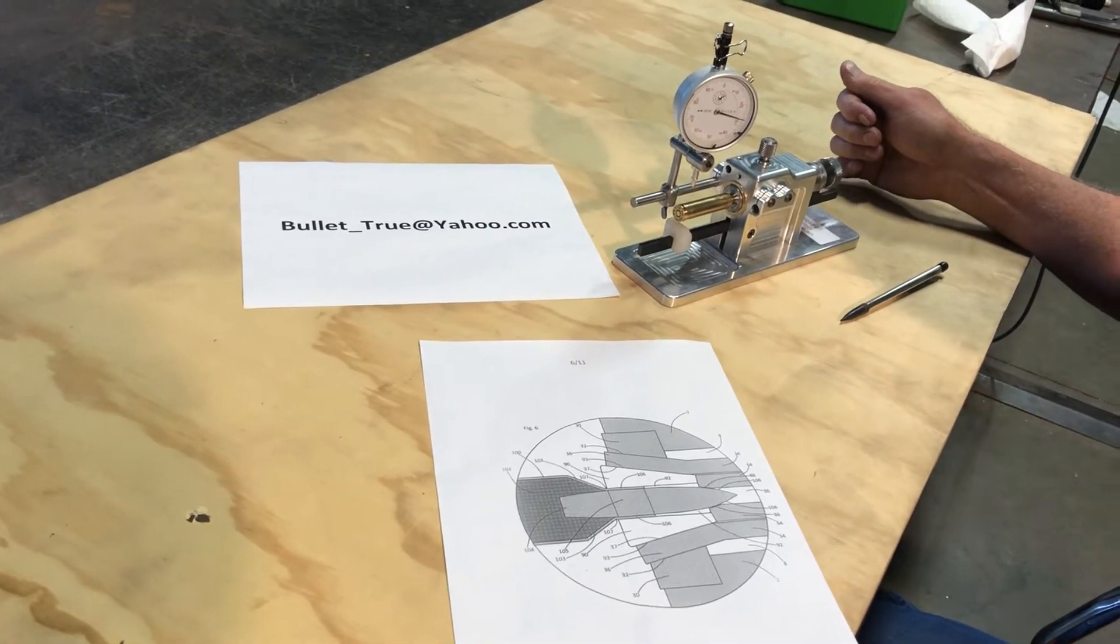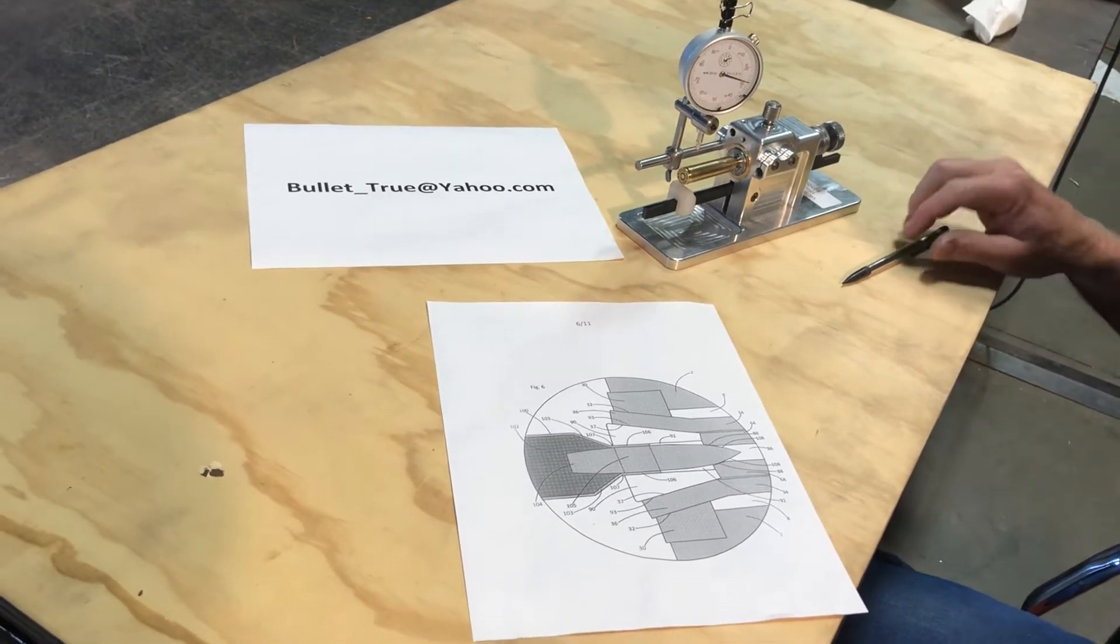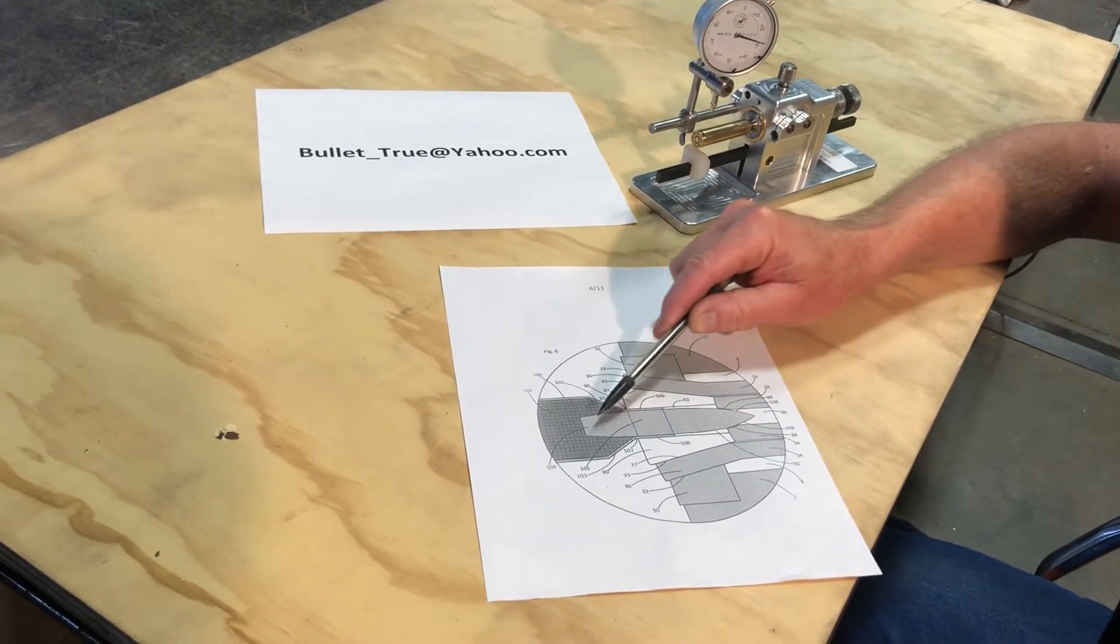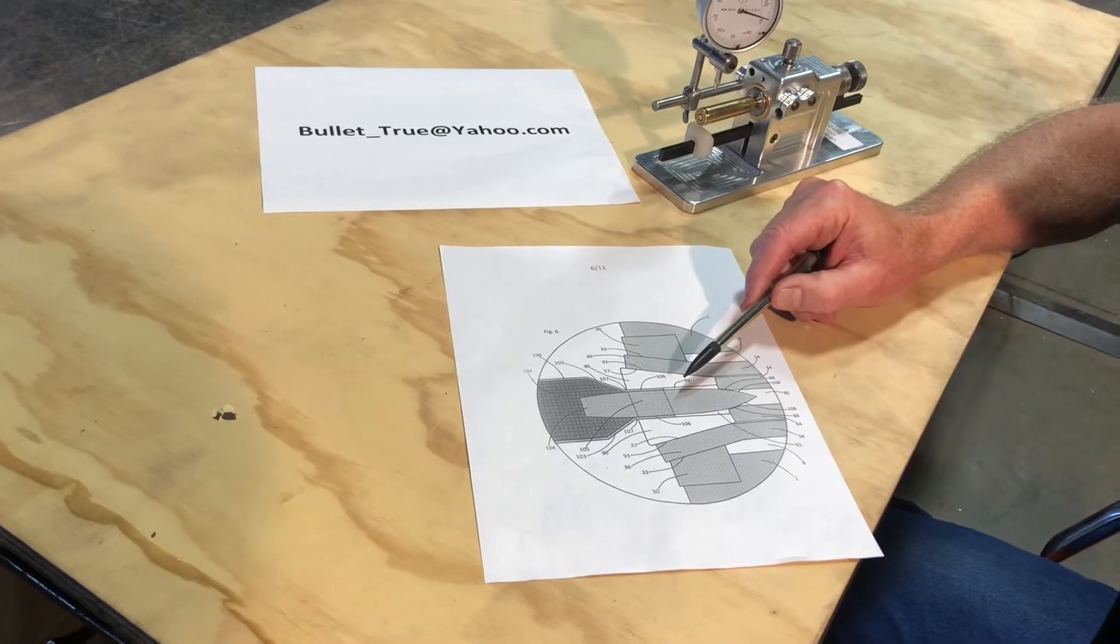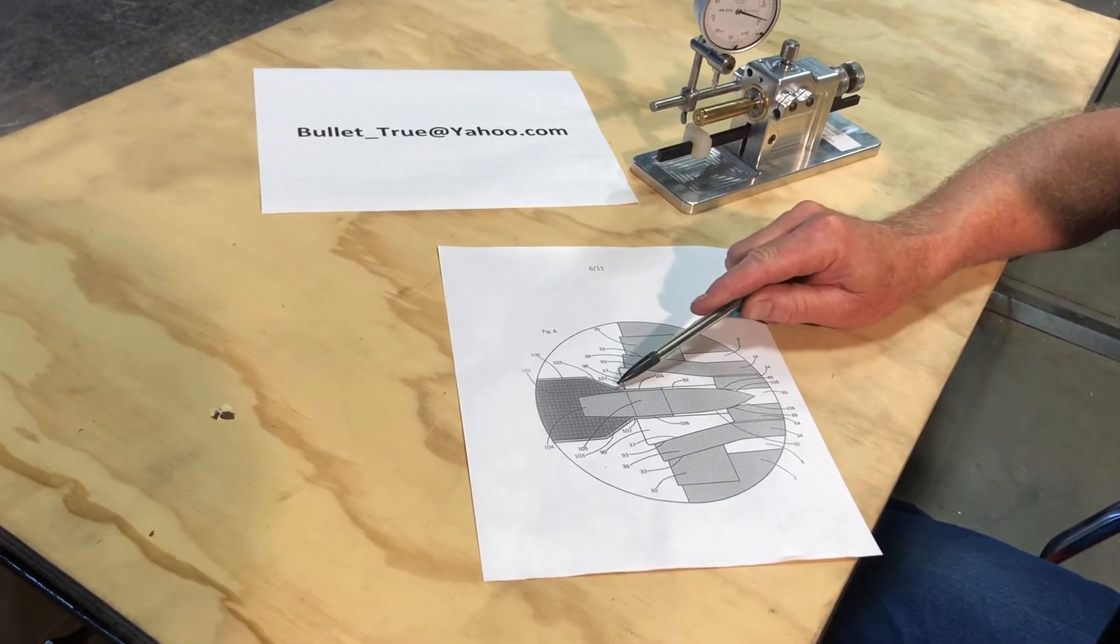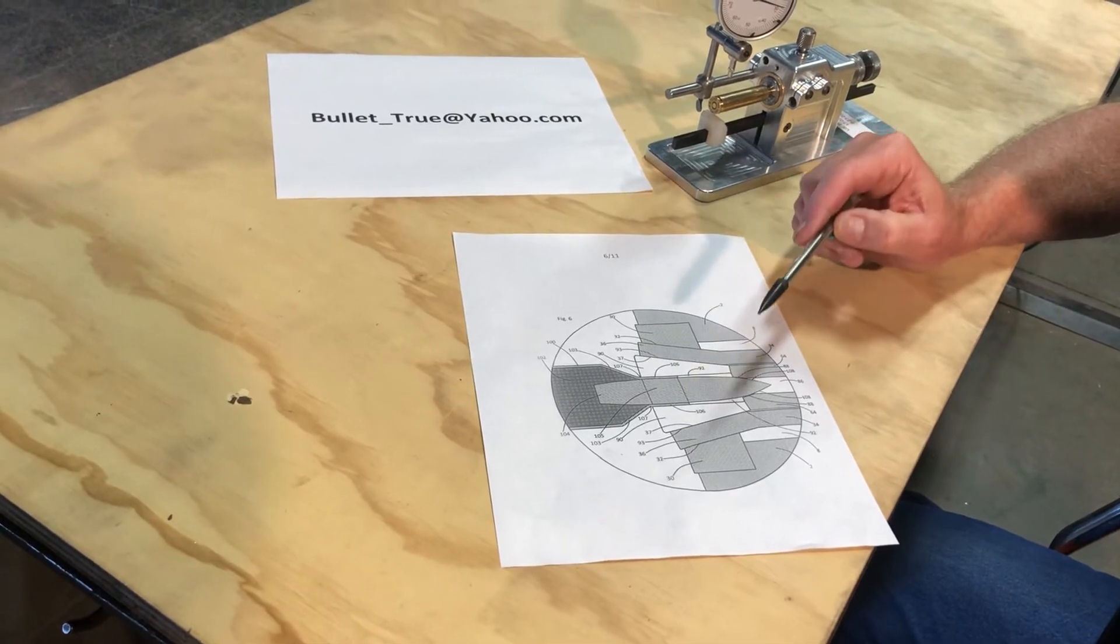It's the only machine of its kind, the way it lines the bullet up concentric to the neck of the cartridge. You adjust the cartridge itself, not the bullet, without losing your neck tension.